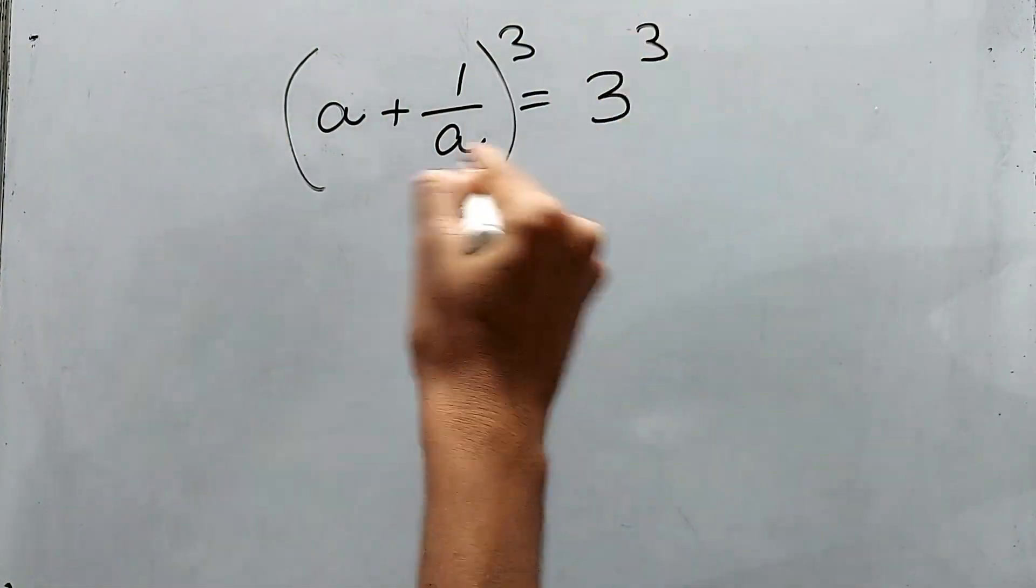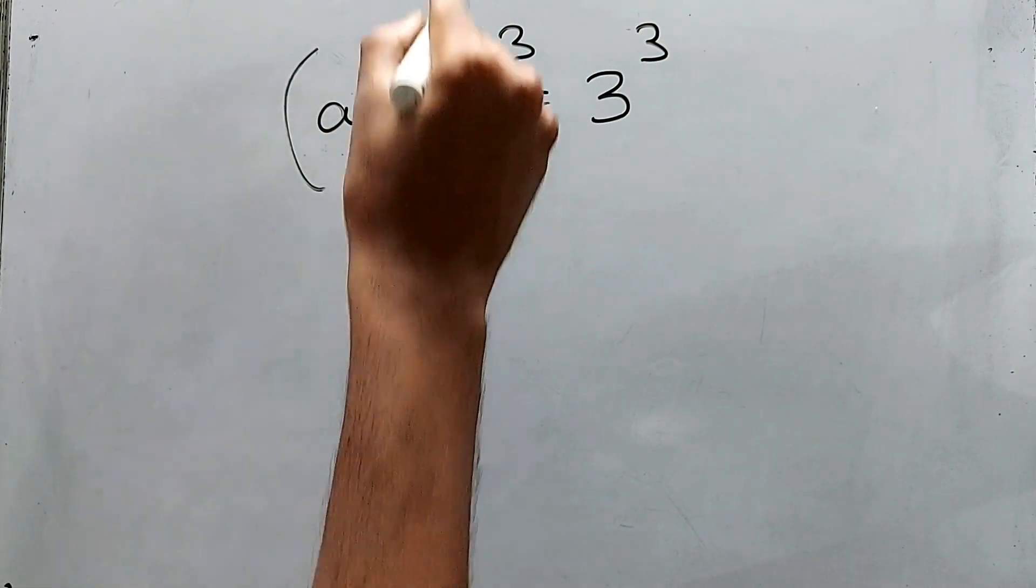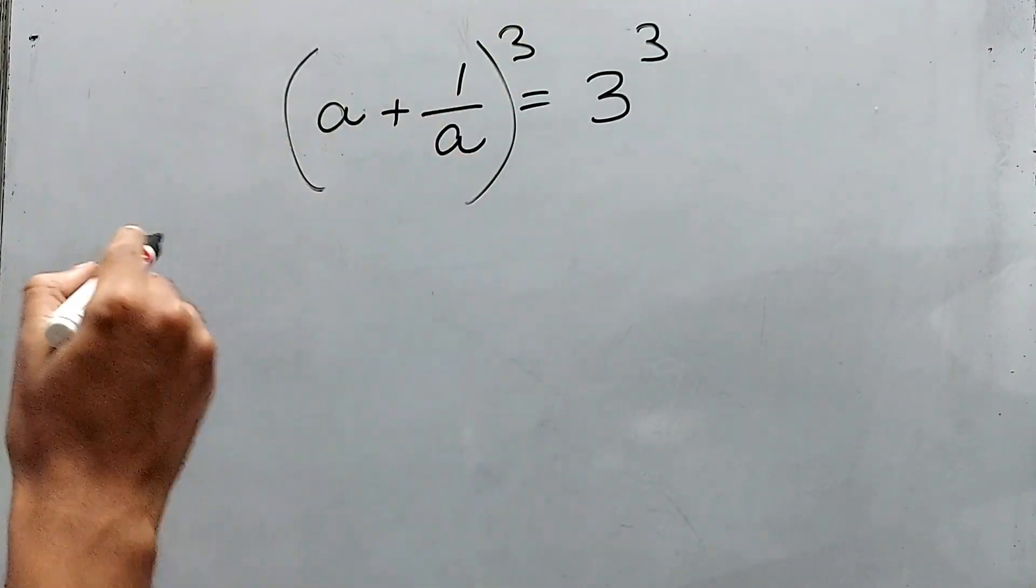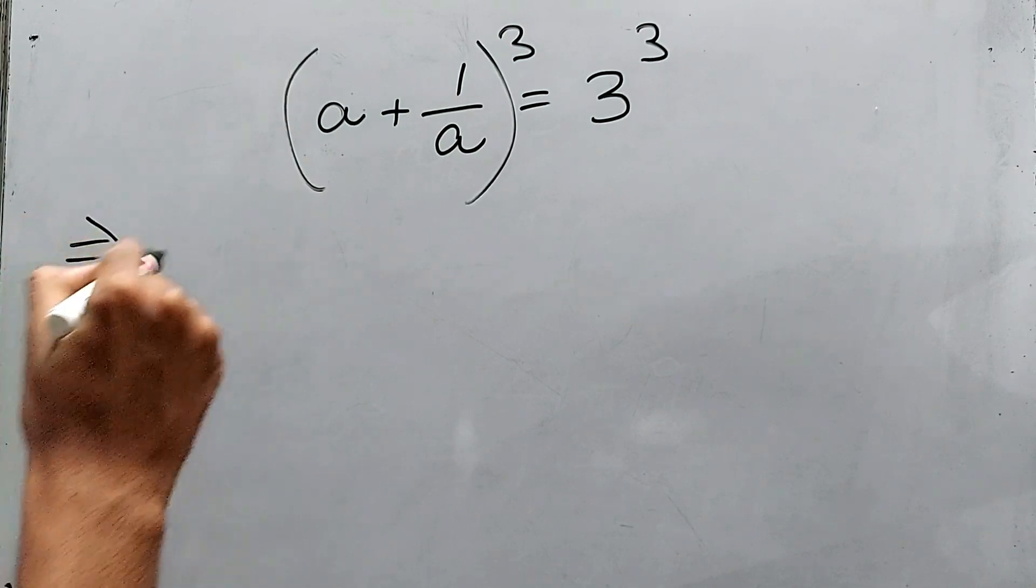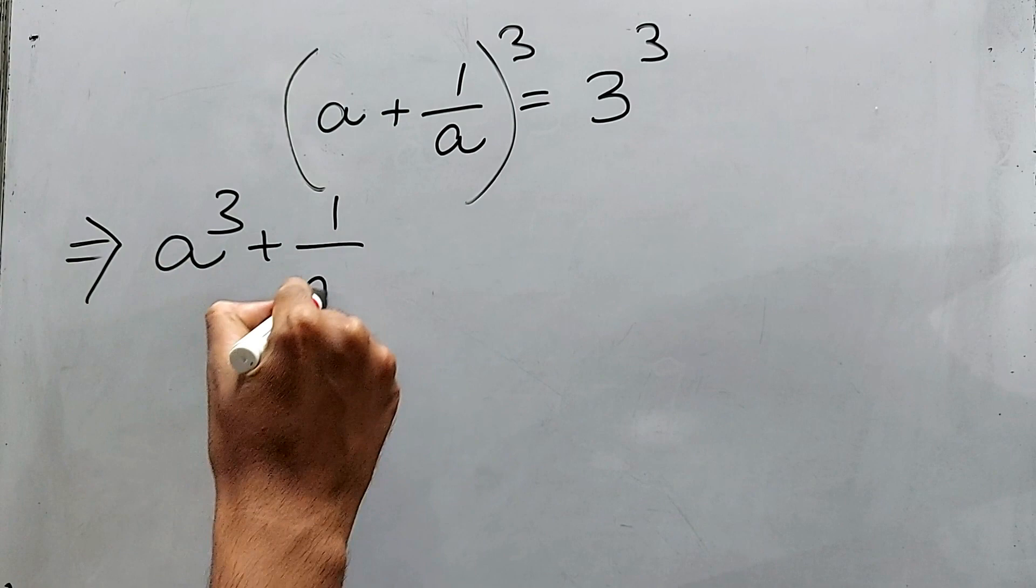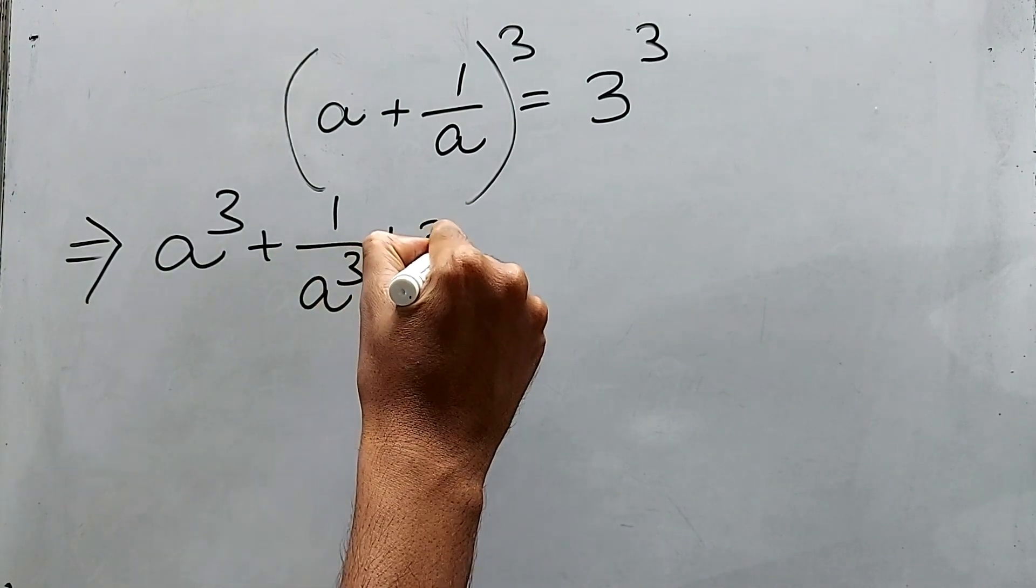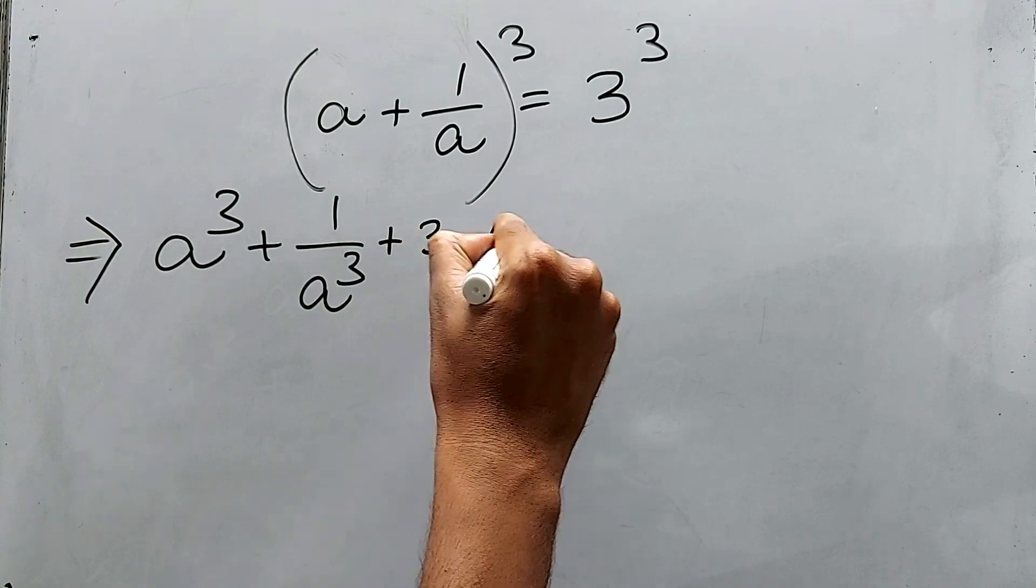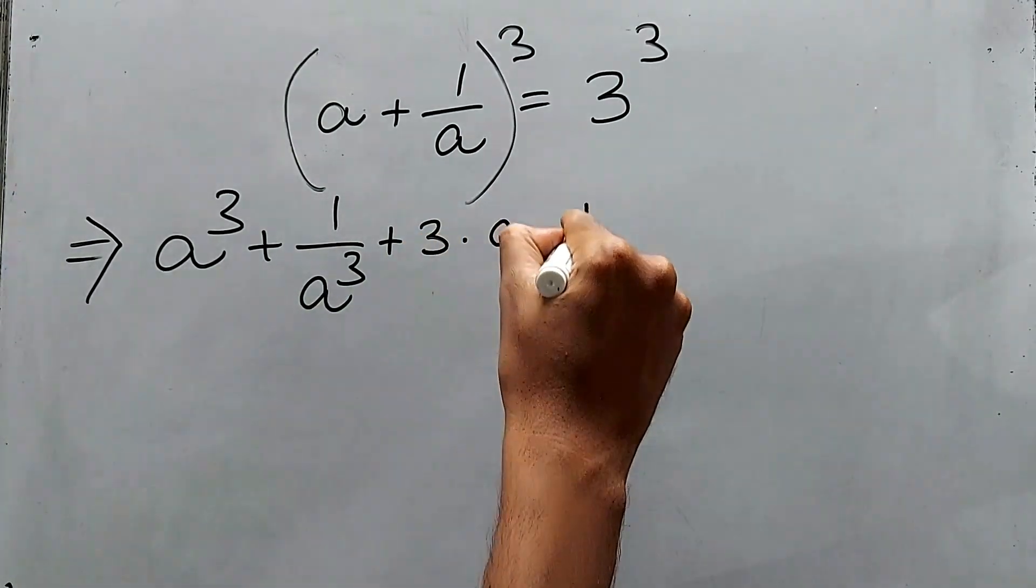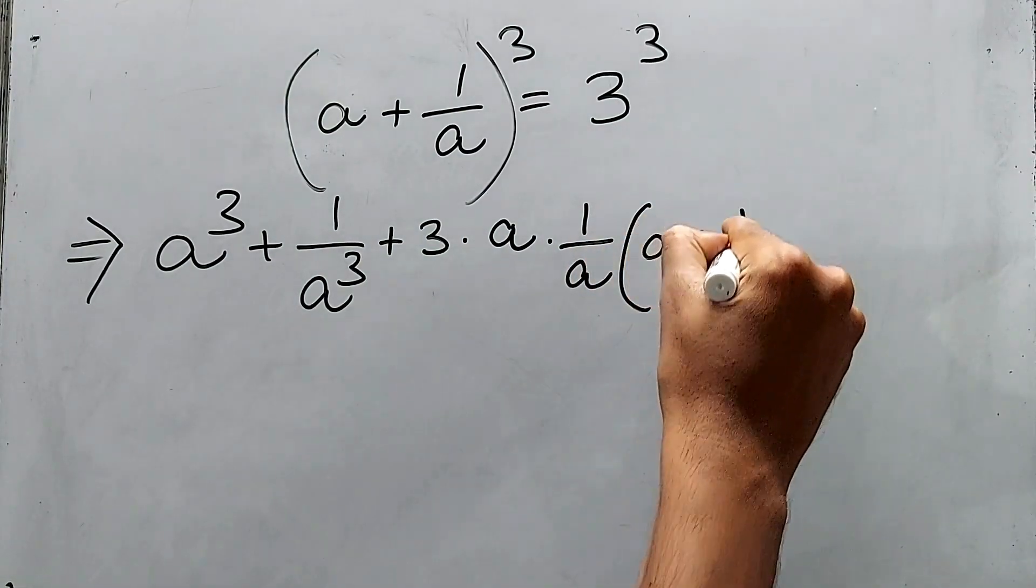(a + b)^3 results in a^3 + 1/a^3 + 3 * a * 1/a * (a + 1/a). And this part is 3^3, which means 27.